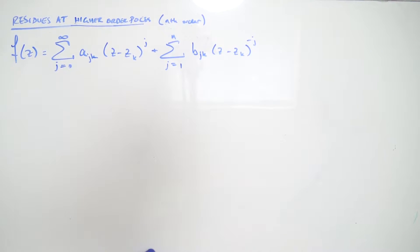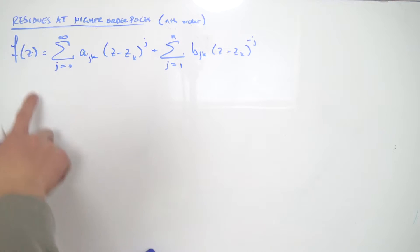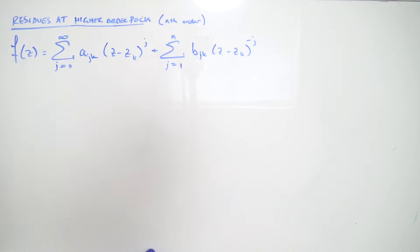Welcome back everybody. Today we're going to be deriving the formula for the residues at higher order poles. Let's suppose we have our function f(z) which can be expressed in terms of its Laurent series.